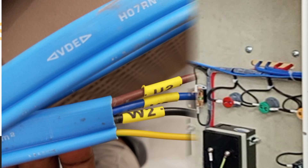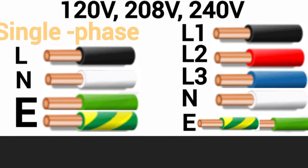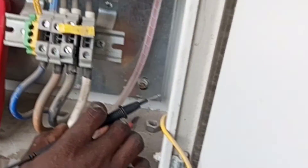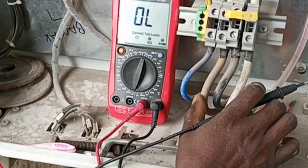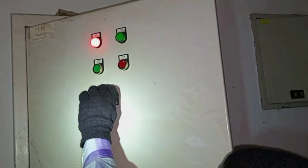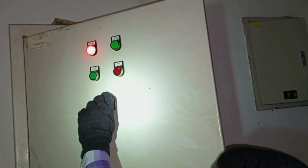Also, engineers and technicians in one country may have to maintain facilities made or designed in another country. This situation implies that it is necessary to know the color codes used in your country and also those used in other countries, so that if you have to maintain an installation from another country or carry out an installation in another country, you can do it properly to avoid mistakes that could lead to accidents.